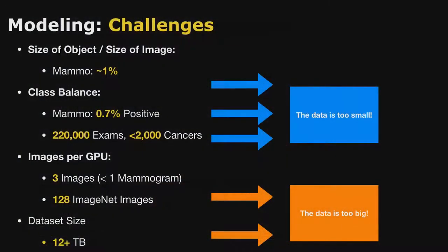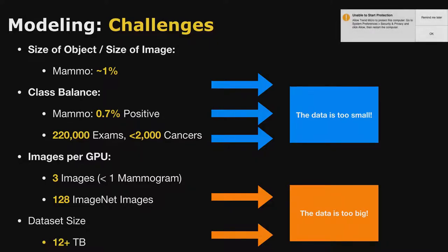The core challenge is that the image is both too big and too small. The cancer might be less than 1% of the mammogram, and about 0.7% of your images have cancer. Even in this dataset from 2009 to 2016 at MGH - a massive imaging center - across all of that you'll still have less than 2,000 cancers. That's tiny compared to regular object classification datasets, even while looking at over a million images across all four views of the exams. At the same time, it's also too big: even if I downsample these images, I can only fit three of them on a single GPU, which limits the batch size I can work with.